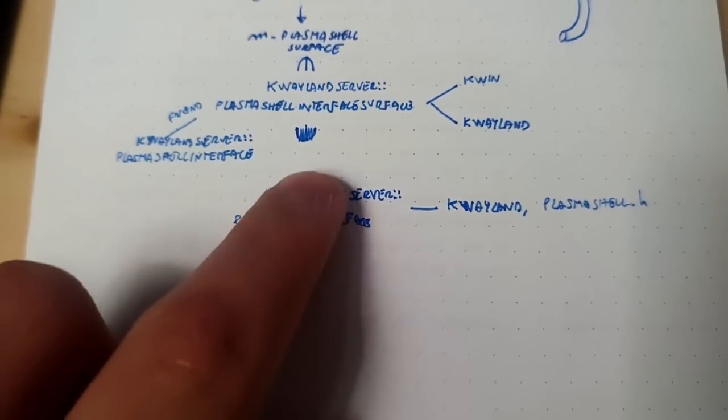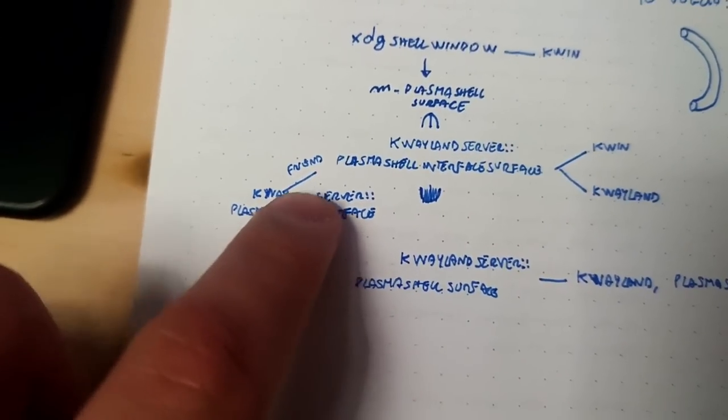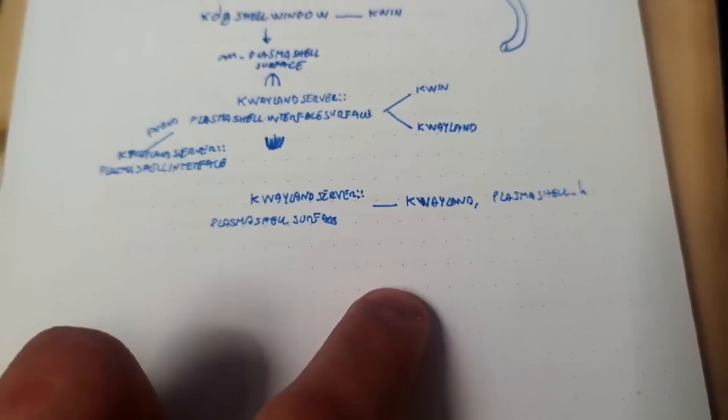It sounds like it should be simple for the panel to ask KWin to reserve a bit less space. It's not. The panel needs to ask an interface called the plasma shell surface how much space to reserve. This value then needs to be read by the plasma shell interface surface — even though it has a friend class, the plasma shell interface, which does most of the work. I have no idea how the plasma shell interface surface should read values from the plasma shell surface just from looking at the code. Then those values go into M plasma shell surface inside the XDG shell window in KWin, from which I can set the correct struts. There are a bunch of things to change just to lie about my struts. Very easy in X11 — hell in Wayland.